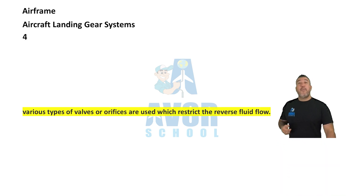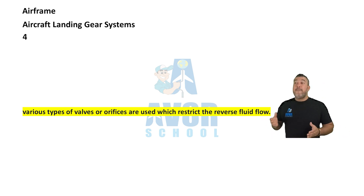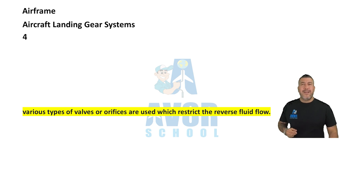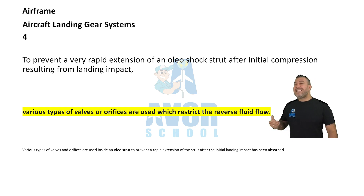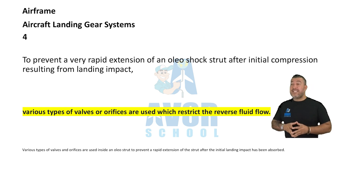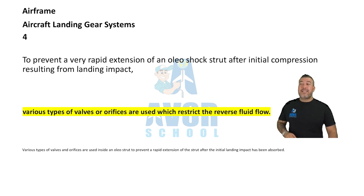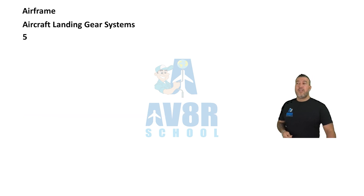Number four: various types of valves or orifices are used to restrict the reverse fluid flow — like a check valve — to prevent a rapid extension of an oleo shock strut after initial compression resulting from landing impact.